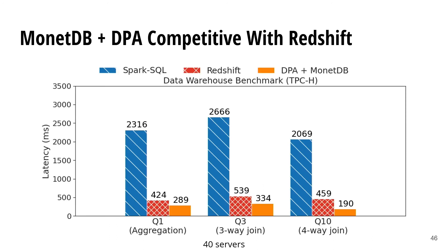We also look at the performance of the simplified data warehouse we built using MinADB and DPA, comparing it to commercial data warehouses like Redshift. What we find is that our performance is actually comparable to that of Redshift. We can't take full credit for that — the reason we're so fast is because MinADB, the system we're distributing, is very fast. But what this shows is that we can distribute a specialized, fast, single-node system and obtain performance comparable to that of a specialized distributed system.